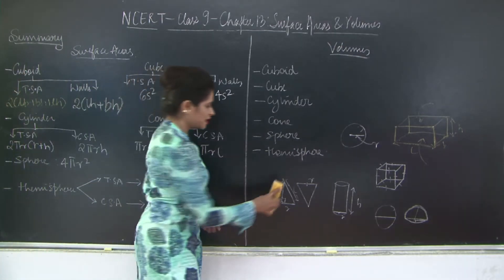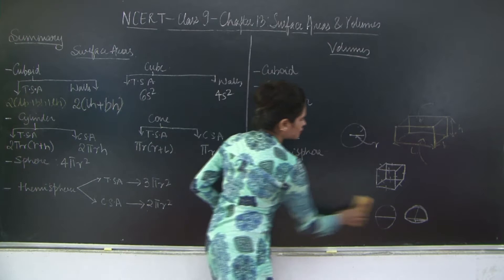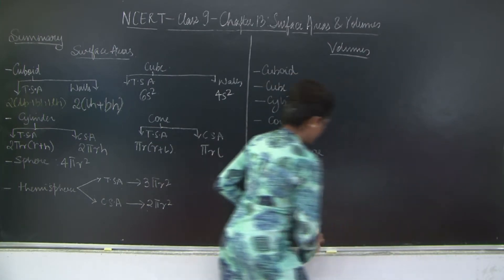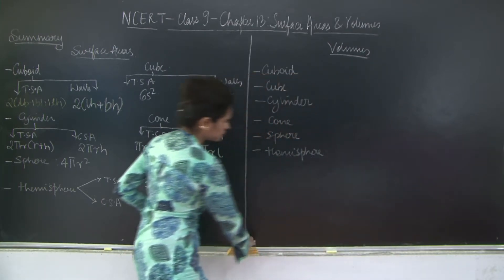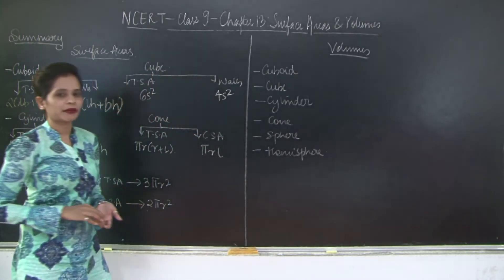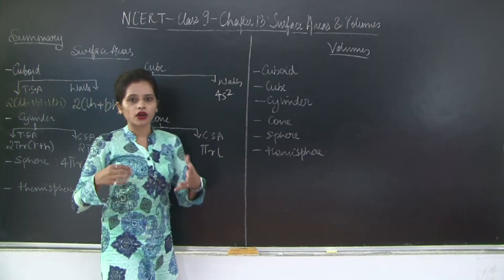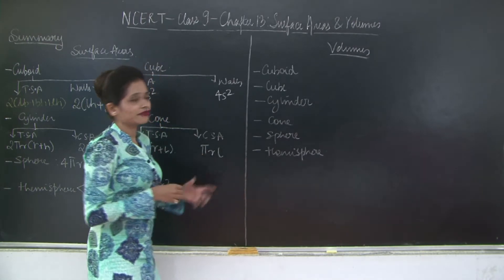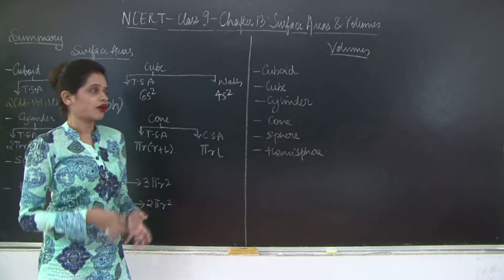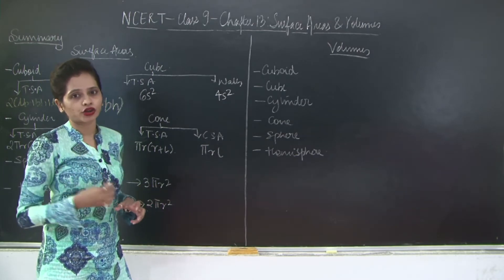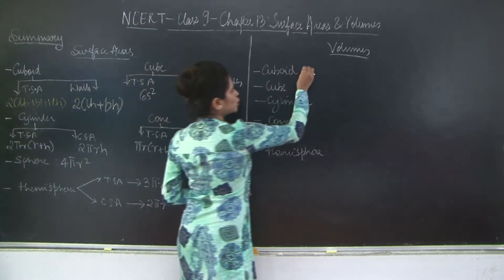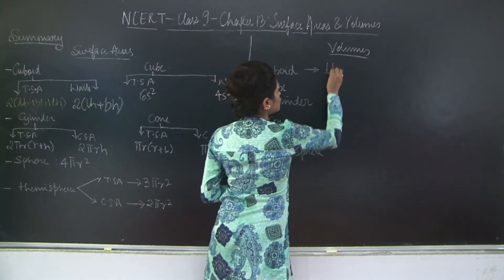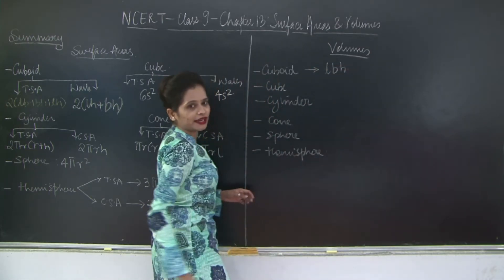Now, volume. Volume is expressed in different terms such as capacity — how much liquid a utensil can contain. It is the amount of solid, liquid, or gas that an empty object can contain, or for a solid object, the amount of space it occupies. For a cuboid, the volume is length × breadth × height, or lbh. For a cube, since all dimensions are equal — l = b = h = s — the volume is side cubed, or s³.